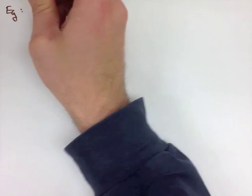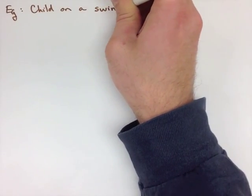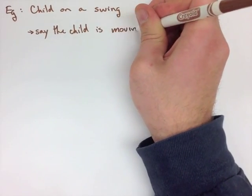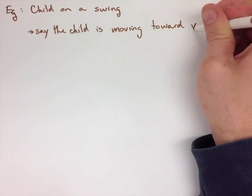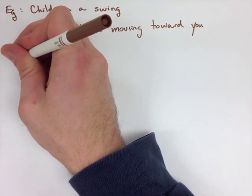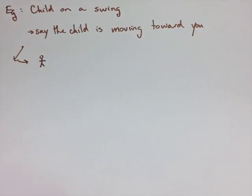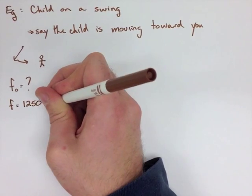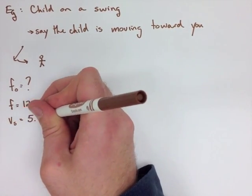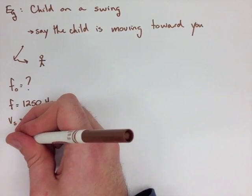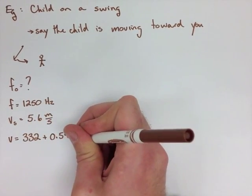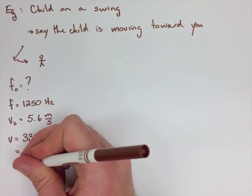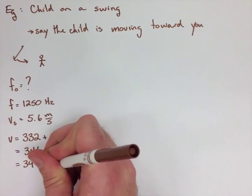In the first example, we have a child screaming on a swing having a great time. She's moving at 5.6 meters per second, and the apparent frequency is 1250 hertz. We have to find the speed of sound at 25 degrees Celsius. If she's moving towards us, we want to find the rest frequency. First we put down our frequencies 1250, the velocity of our source is 5.6, and we use 332 plus 0.59 times 25 to find our speed of sound, which turns out to be 347 meters per second.